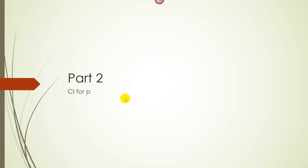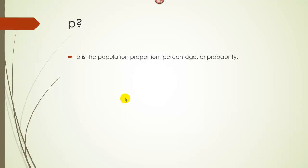For part two, let's explore confidence intervals for proportions. So what is P? P is the population proportion, percentage, or probability. If you see any of these P words in the problem, you're talking about a population proportion.